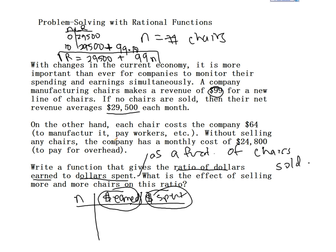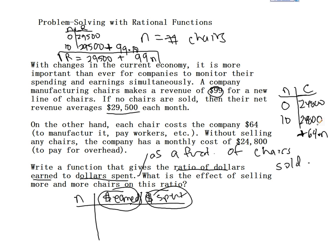Similarly, we're told that without selling any chairs, the company has a monthly cost of $24,800. I'm going to mark cost as a positive number — normally cost is associated with negative numbers — however, if I sell zero chairs, I'll have a cost of $24,800. If I sell 10 chairs, this will be $24,800 in cost plus an additional cost of $64 times the number of chairs sold. So the cost function is the base cost plus $64 times the number of chairs.